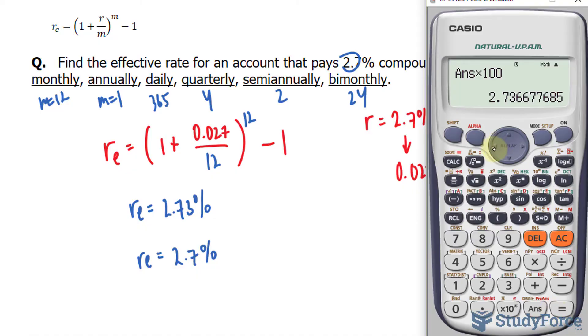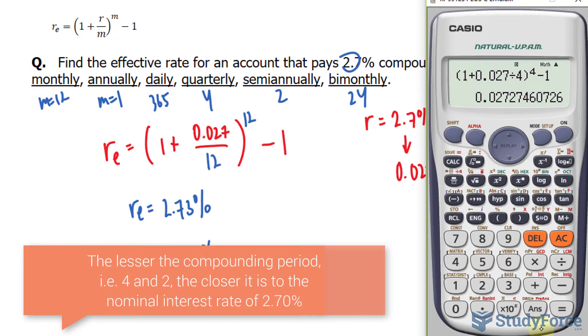Let's find out what happens quarterly. We'll change this into a 4. That into a 4. Again, 2.7%.